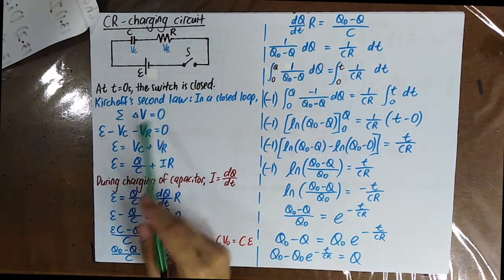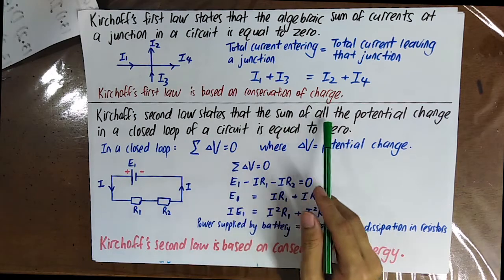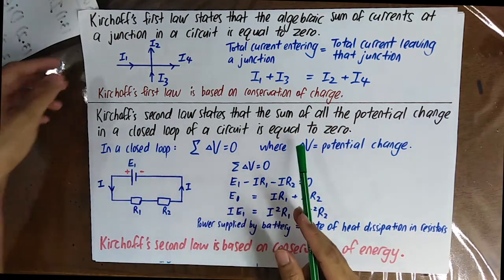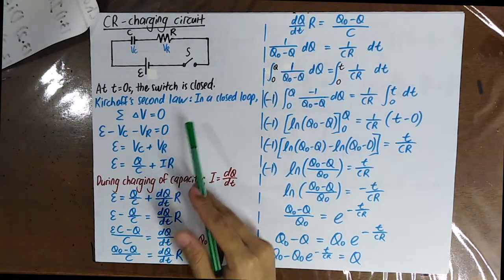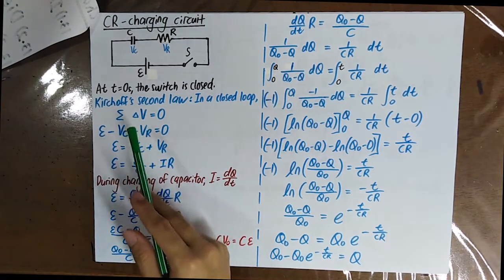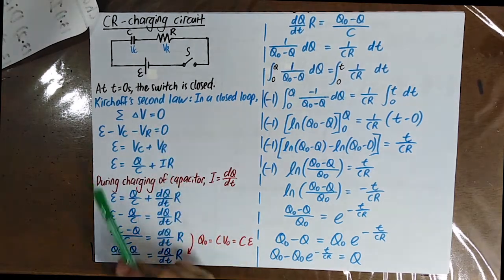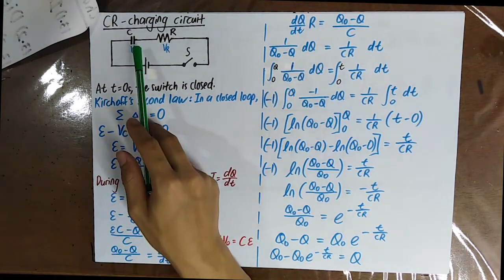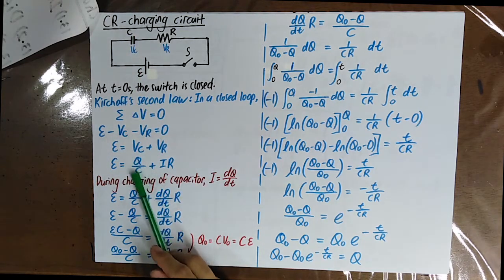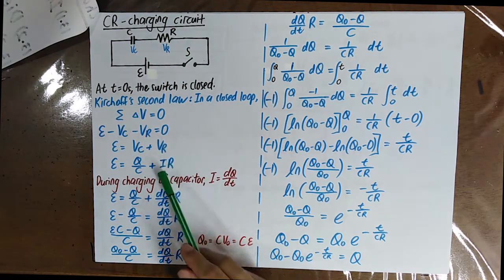By using Kirchhoff's second law — which states that the sum of all the potential changes in a closed loop of a circuit is equal to zero — in this closed loop, the summation of all potential changes equals zero. So E minus VC minus VR is equal to zero. VC is the potential difference across the capacitor, equal to Q over C. VR is the potential difference across the resistor, equal to IR.